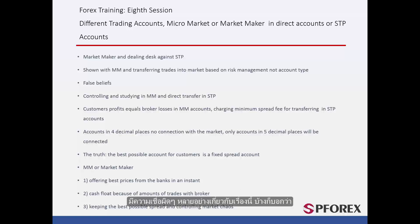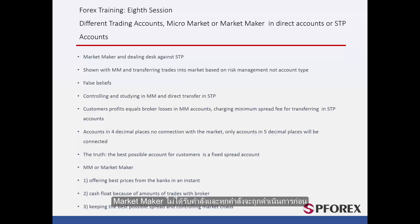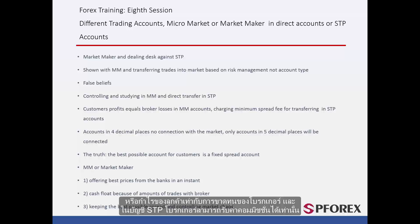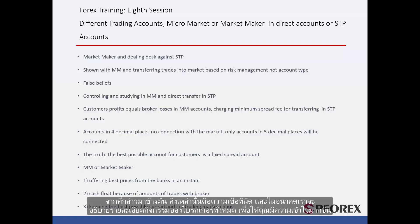There are many false beliefs regarding this area. Some say that with market makers, orders are not received and every single one will be processed first, or that the customer's profit is equal to the broker's losses, or that in STP accounts brokers can only take their commission, or that accounts with 4 digits will not make it to the market and only 5-digit accounts are eligible to be in the market. As mentioned, these are all false beliefs, and in order to make things clear we will illustrate all broker activity in the future.